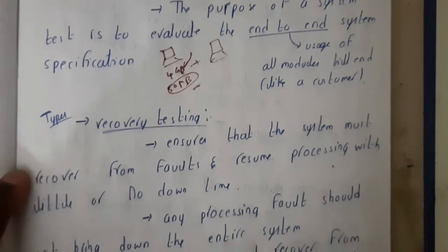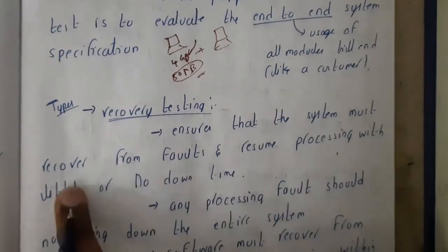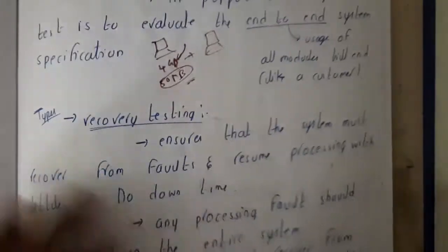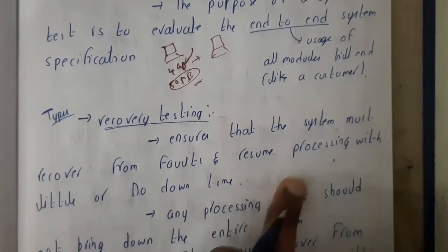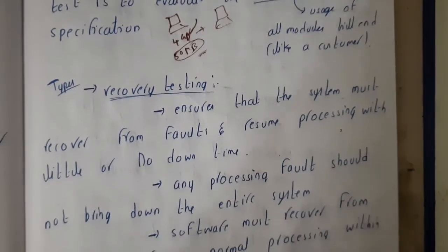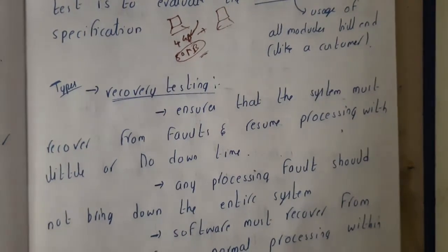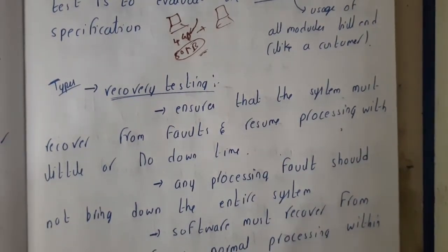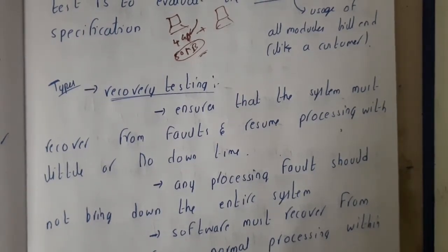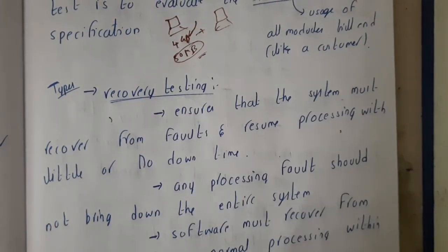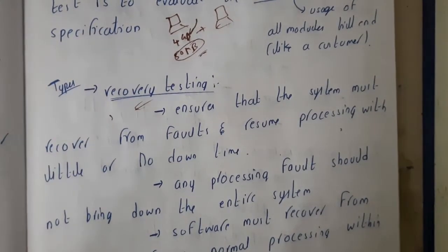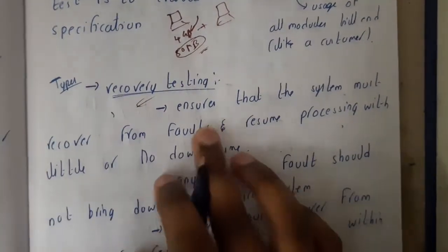Now let us go through the types of system testing. First is recovery testing. It ensures that the system must recover from faults and resume the process with little or no downtime. When designing an application, the response time and recovery time should be fast. A website or server will go down sometimes, but it should recover within a limited time — around 30 to 40 minutes for lower-traffic sites. For high-traffic platforms like YouTube or Facebook, recovery should happen within minutes or even seconds.